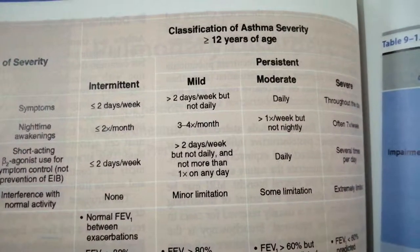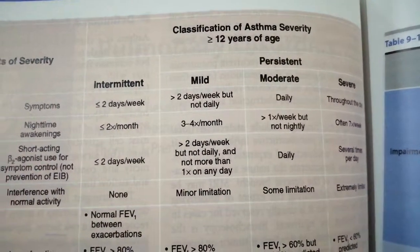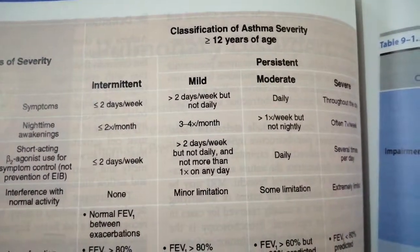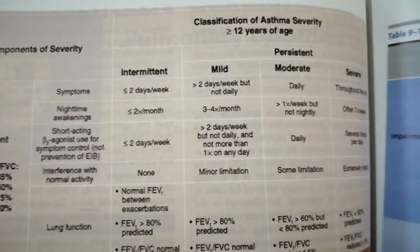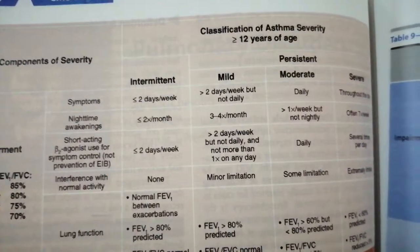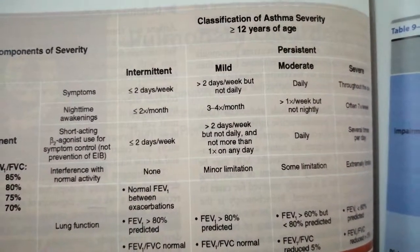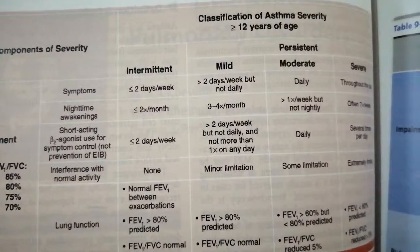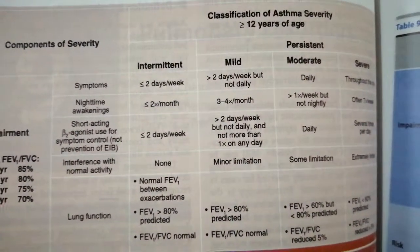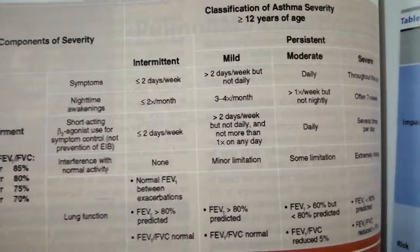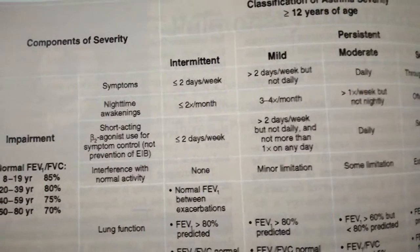Today we are going to classify asthma based on its severity. There are five criteria on which we grade it as intermittent, mild, moderate, or severe. Number one is the symptoms, and number two is how many times at night you are awakened by your symptoms.